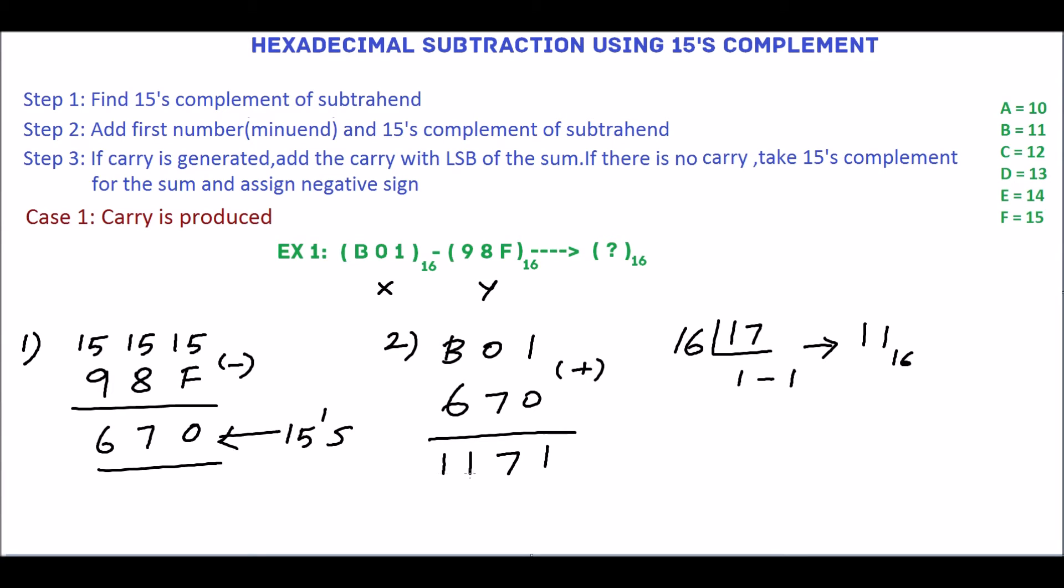Write 11. In step 2, the carry is produced. This is called the end-around carry. So add this carry with the LSB of the sum. Add this: 1 plus 1 is 2, 7, 1. 1-7-2 base 16 is the answer.